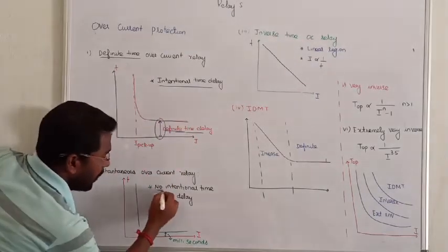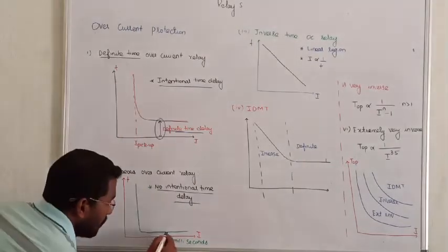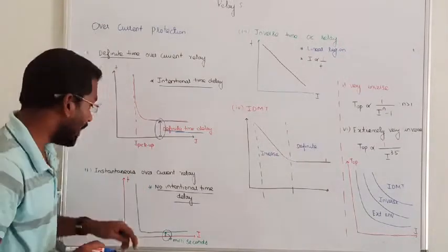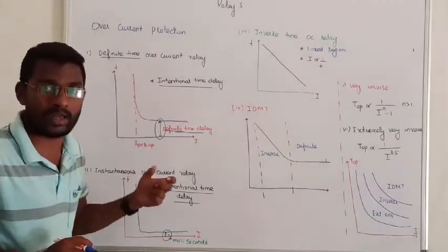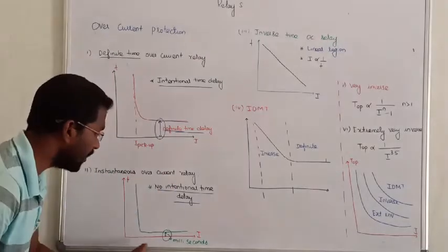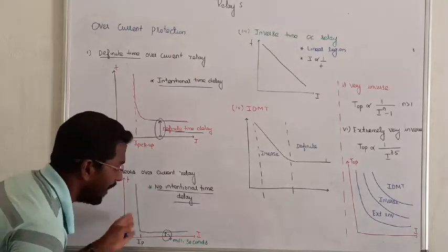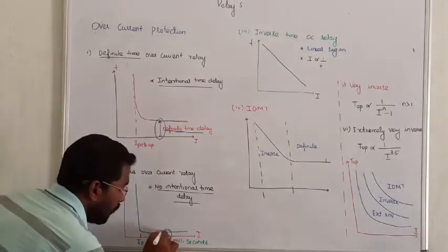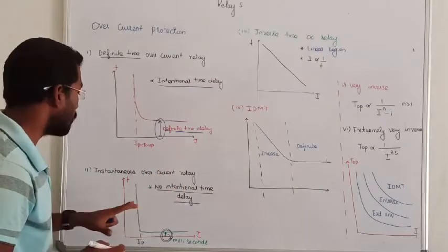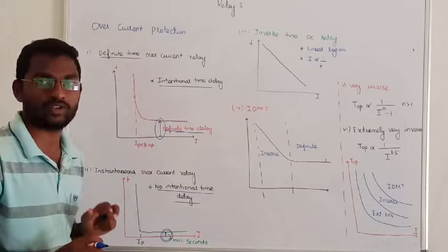When you say instantaneous overcurrent relay, if you have a pickup value and there is zero time delay, there will be a small fraction of a millisecond delay practically. But ideally, there is no such phase shifting or delay. That is called instantaneous overcurrent relay.